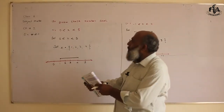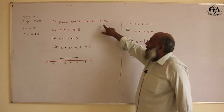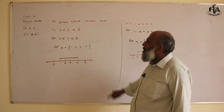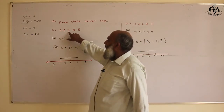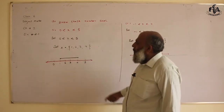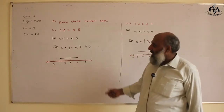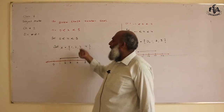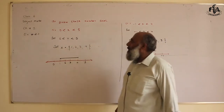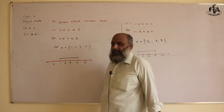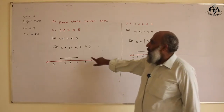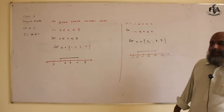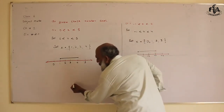After this topic, we have exercise 2.1. In 2.1, the question is: draw these numbers on a number line. The question is: zero is less than x and x is less than five. Which numbers satisfy this? Those numbers that are greater than zero and less than five. The numbers in x are: one, two, three, four.